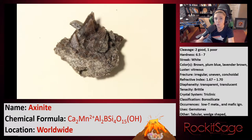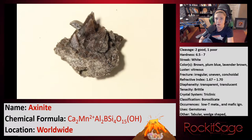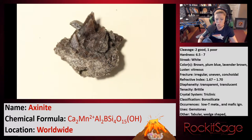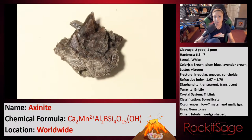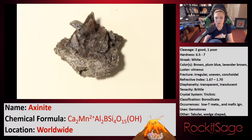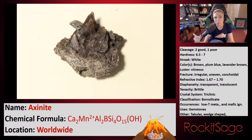There are two good cleavage planes and one poor cleavage plane in this mineral. The hardness ranges from six to seven, depending on the crystallographic axis on which you're measuring. It can be brown, plum, blue, lavender brown — it can actually even be yellow or pearl gray, or greenish. It can fracture irregularly, unevenly, and even concoidally like quartz. The refractive index is anywhere from 1.70 to 1.74, and it ranges again with the differences in chemical composition.